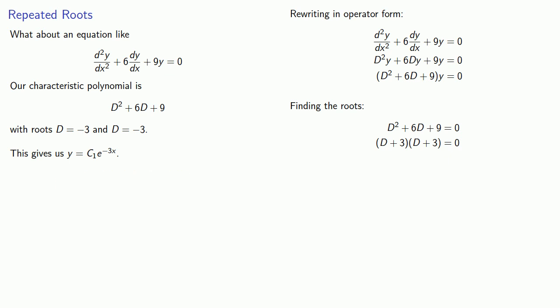And while this is a general solution, this doesn't actually include all of the solutions. Remember that since this is a second-order differential equation, we're supposed to have two unknown constants, and we only have one. We must be missing a whole set of solutions. So where are they?